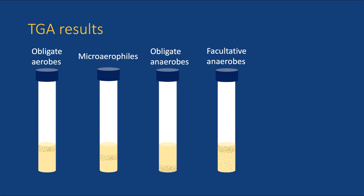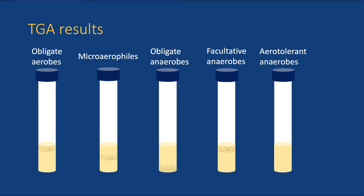Facultative anaerobes can grow both with or without oxygen. Without oxygen, they use fermentation or anaerobic respiration. However, if there is oxygen present, they will use aerobic respiration, which produces more ATP than fermentation or anaerobic respiration. These bacteria can grow throughout the TGA tube, but they grow faster near the top where there is oxygen present. Lastly, aerotolerant anaerobes are bacteria that do not use oxygen for their metabolism. They use either fermentation or anaerobic respiration or both for their growth. Interestingly, these bacteria are not harmed by oxygen; therefore, they grow equally well with or without oxygen and will grow evenly throughout the tube.